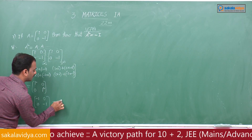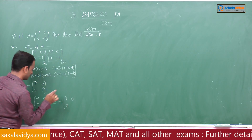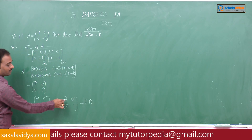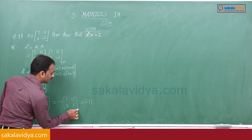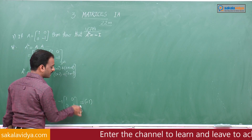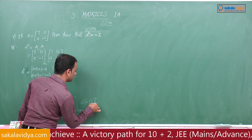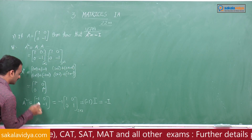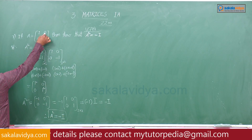If we take minus 1 common, from the first element we get 1, second element 0, third element 0, and fourth element 1. This is minus 1 times the identity matrix of order 2×2, denoted by capital I. Therefore A squared equals minus capital I, where A equals [[I, 0], [0, -I]]. This is proven.